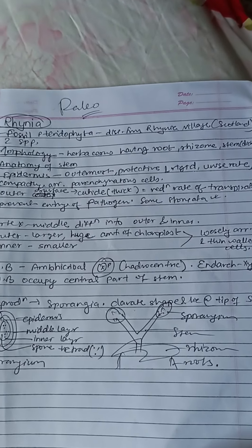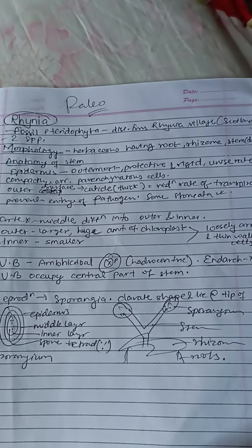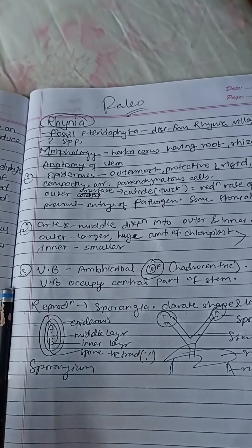There is a cuticle, a single layer. The cuticle is used to reduce the rate of transpiration and prevent the entry of pathogens.